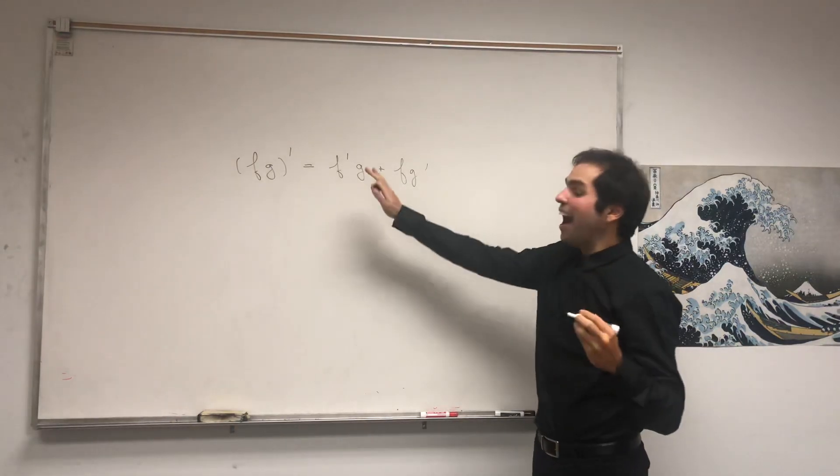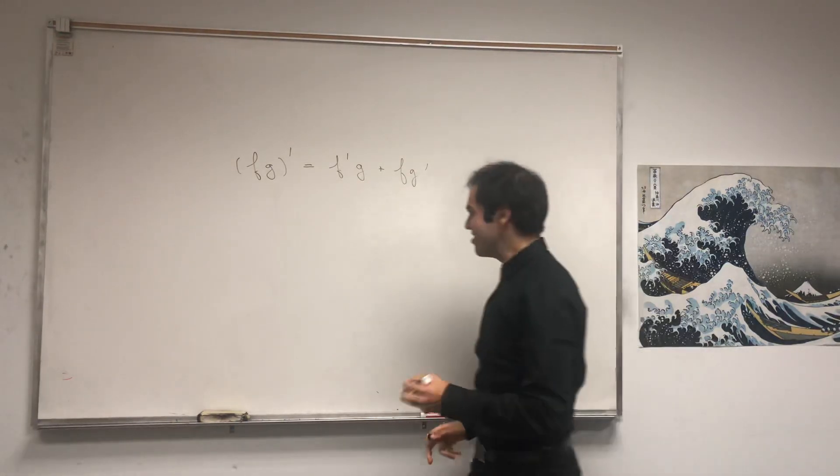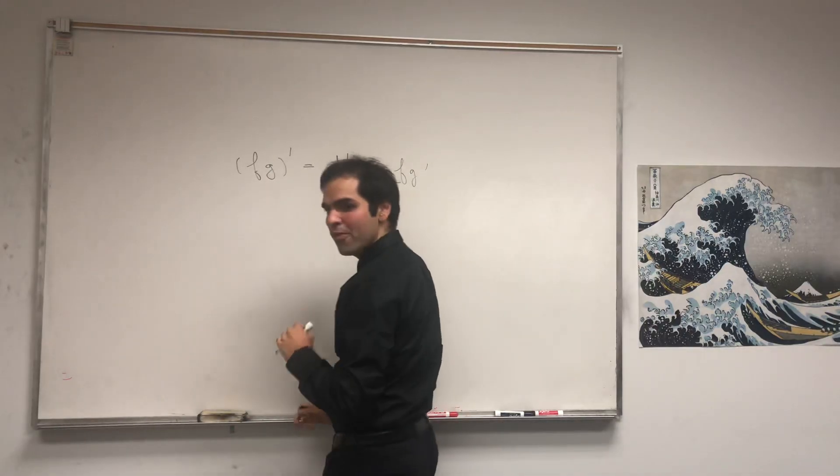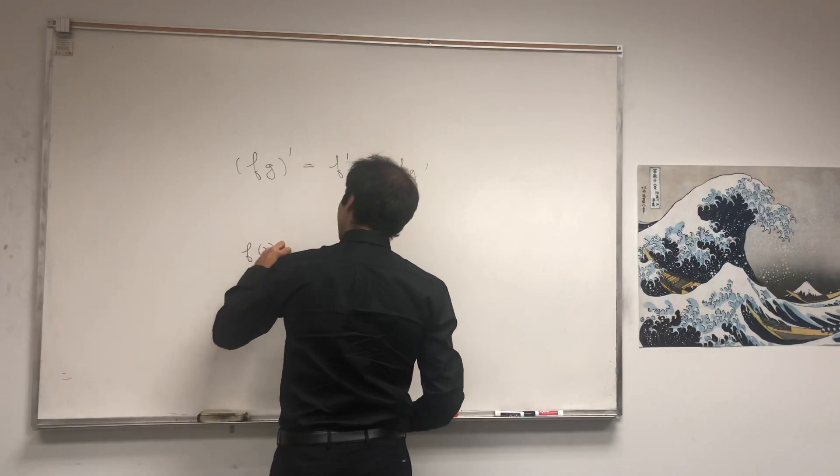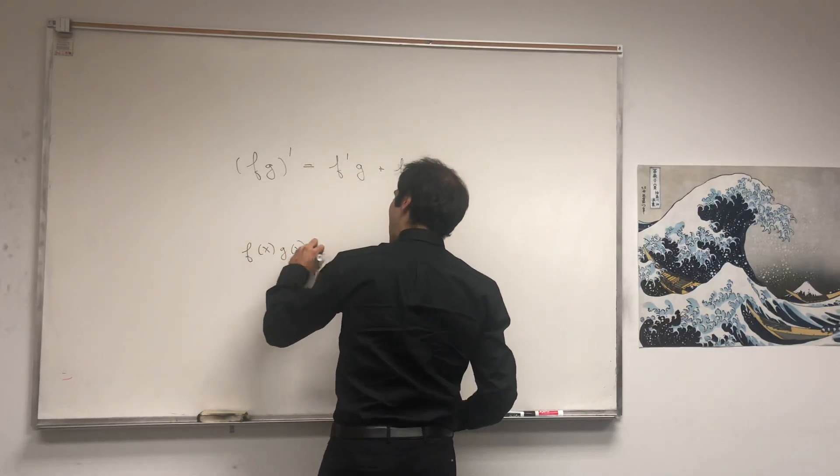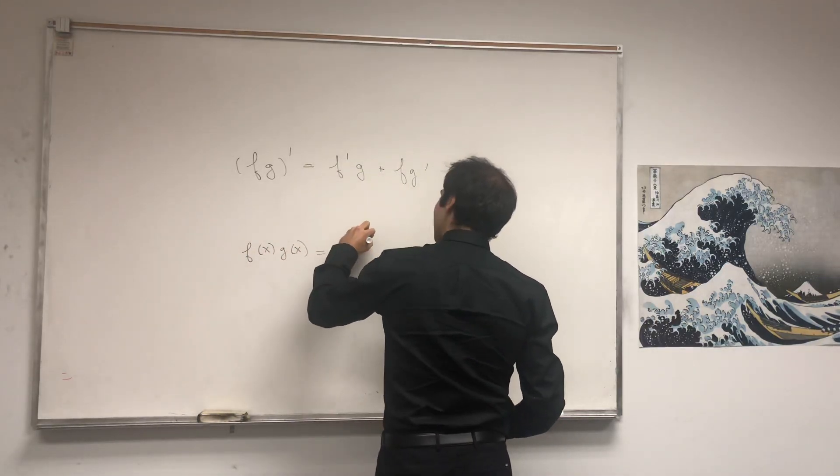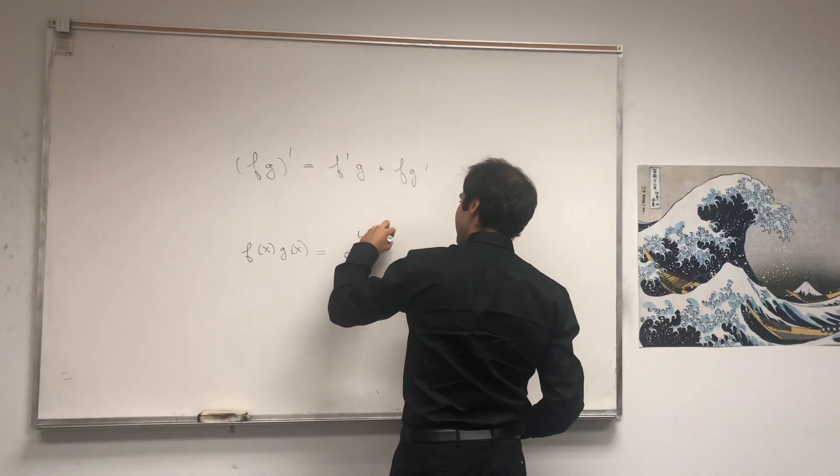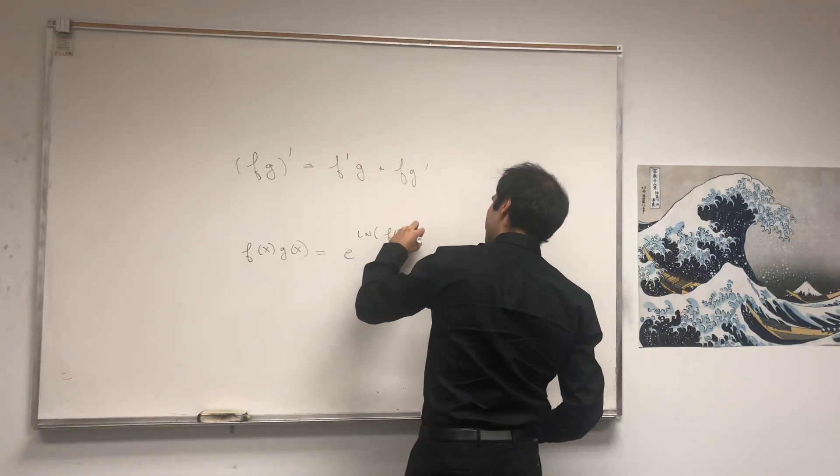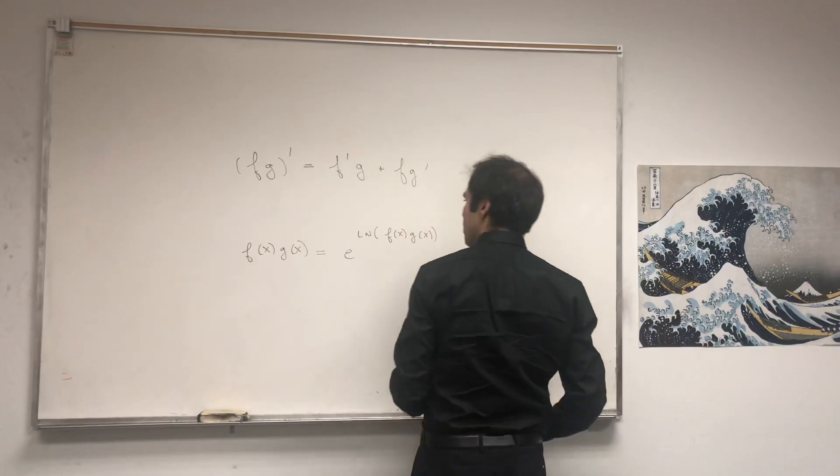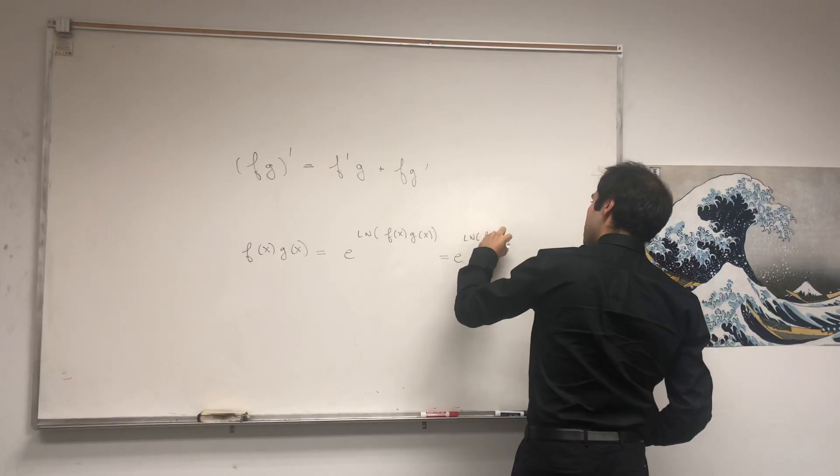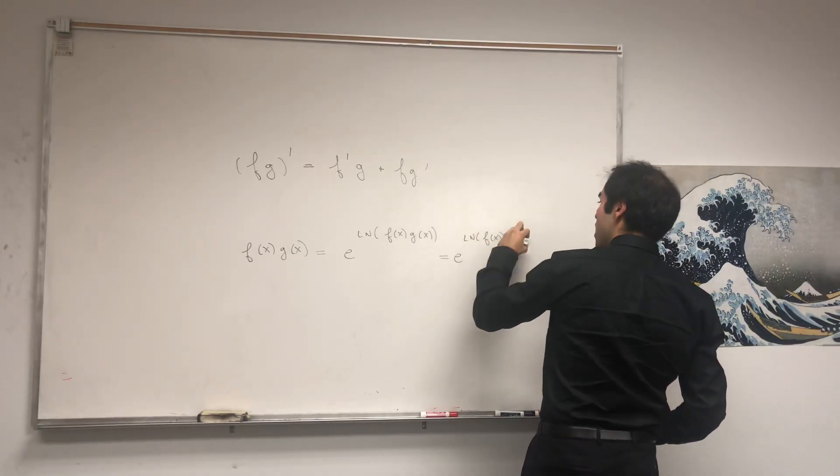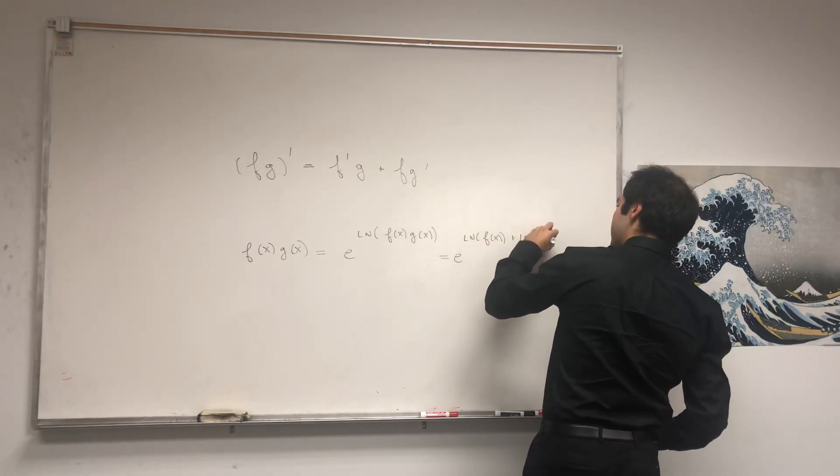How can we show this? Here's the cool thing, and it only works for f and g positive. Let's write f times g as e to the ln of f times g. Which if you want, that's e to the ln of f of x plus ln of g of x.